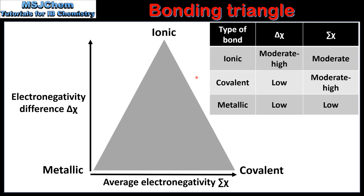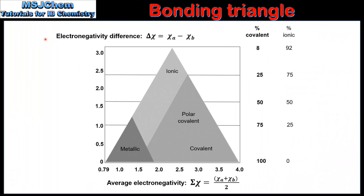We'll also see that Bonding is often described as a Continuum, which means for example we can have Ionic Bonds with some Covalent Character, as well as Covalent Bonds with Ionic Character. Here we have a more detailed Bonding Triangle. Just like the previous example this Triangle has Metallic, Ionic and Covalent Bonding, but it also has a section labelled as Polar Covalent.